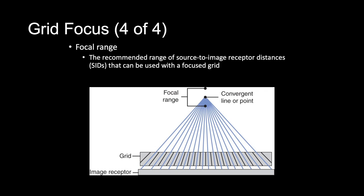For example, a common focal range is 36 to 42 inches with a focal distance of 40 inches, and another common focal range is 66 to 74 inches with a focal distance of 72 inches. That is why 40 inches and 72 inches are the most common SIDs that we use. Because the lead lines in a parallel grid are not angled, they have a focal range extending from a minimum SID to infinity.